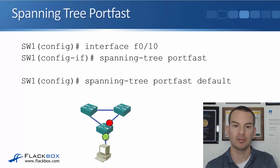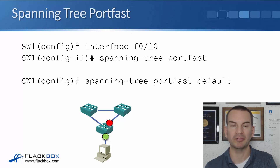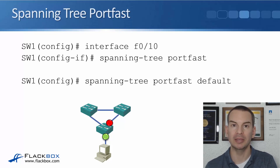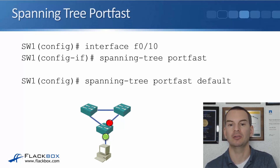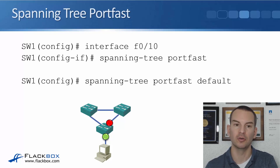This is done with the PortFast command, configured at the interface level. With the PC plugged into interface FastEthernet 0/10, at interface config you enter 'spanning-tree portfast'. This disables spanning tree from running on the port and it will transition to forwarding immediately. You can also set all ports to PortFast by default using the global config command 'spanning-tree portfast default', then enter 'no spanning-tree portfast' on any ports connected to switches.